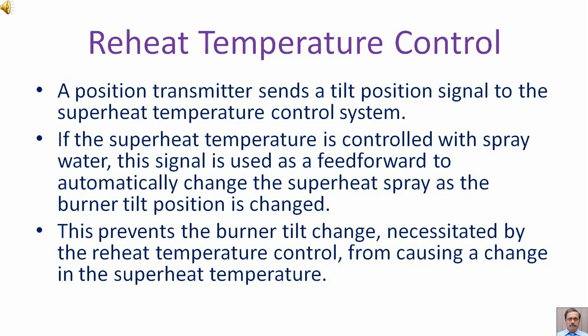A position transmitter sends a tilt position signal to the superheat temperature control system. If the superheat temperature is controlled with spray water, this signal is used as a feed forward to automatically change the superheat spray as the burner tilt position is changed. This prevents the burner tilt change necessitated by reheat temperature control from causing a change in the superheat temperature.